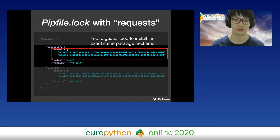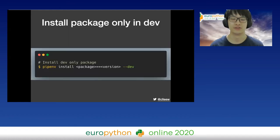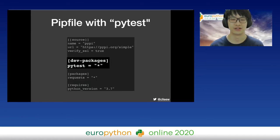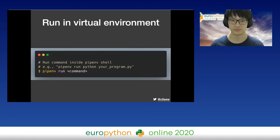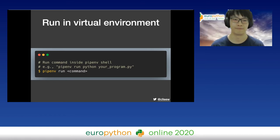Even if the next time you download it the code is changed but the version is still 2.22.0, pipenv will raise an error, so you are guaranteed to have the exact same package. Sometimes you don't need everything in your production environment, so you can install packages into your development environment only by adding a --dev argument — they will appear in the dev packages section in your Pipfile. To run your Python program inside the virtual environment, you can do pipenv run python your_program, or something like pipenv run django manage.py to start the web server.